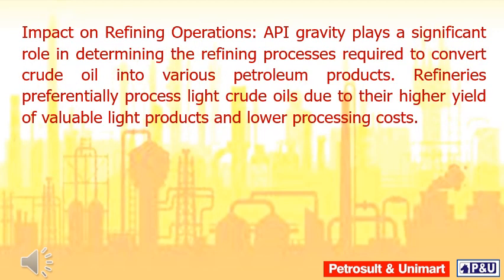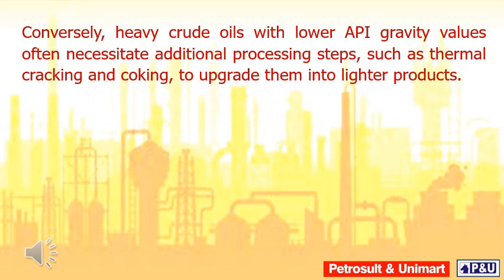API gravity plays a significant role in determining the refining processes required to convert crude oil into various petroleum products. Refineries preferentially process light crude oils due to their higher yield of valuable light products and lower processing costs. Conversely, heavy crude oils with lower API gravity values often necessitate additional processing steps such as thermal cracking and coking to upgrade them into lighter products.